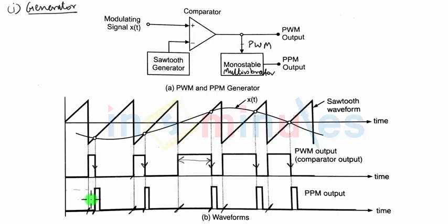In PWM there is one problem. The problem is that the transmission power in each and every pulse is different. When the width of the pulse is more, you require more power for the transmission. When the width of the pulse is small, you require less power.